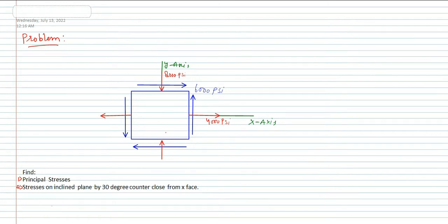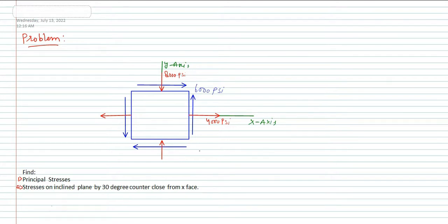Let us solve a problem based on principal stresses and stresses on an inclined plane. We have a section on which a shear stress of 6000 psi is acting, the normal stress on the x-axis is 4000 psi, and on the y-axis is 8000 psi.